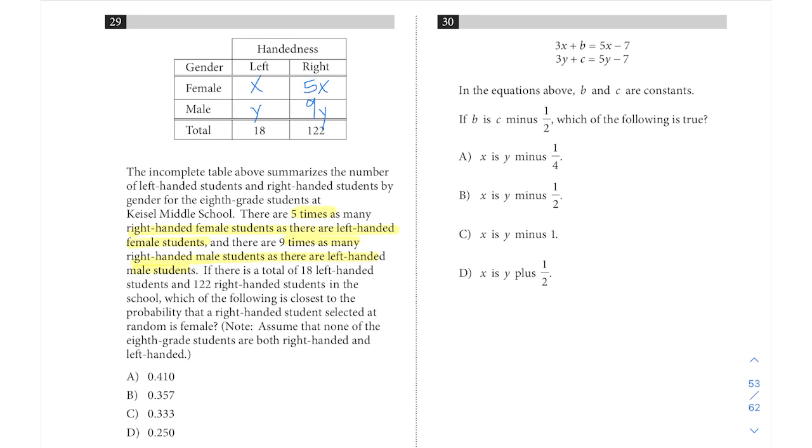If there's a total of 18 left-handed students and 122 right-handed students in the school, which of the following is closest to the probability that a right-handed student selected at random is female? By designating those relationships of x to 5x and y to 9y, we have allowed ourselves enough information to generate a system of equations.